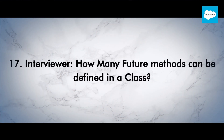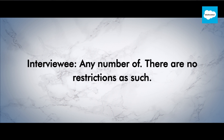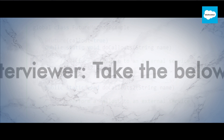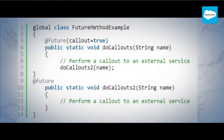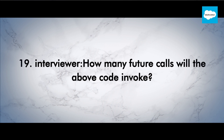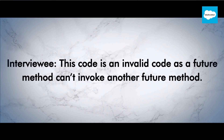Interviewer: How many future methods can be defined in a class? Interviewee: Any number — there are no restrictions as such. Interviewer: How many future calls will the above code invoke? Interviewee: This code is invalid, as a future method can't invoke another future method.